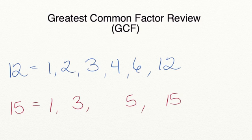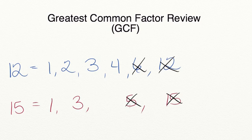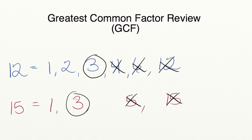Now we just have to compare and see the largest factor that they both share. They don't share 12 or 15. They do not share 6 as a factor or 5. They do not share 4 as a factor. But look at this — they both share 3 as a factor. So the greatest common factor that they both have is the number 3.